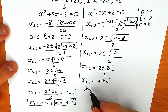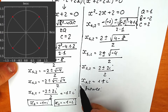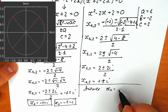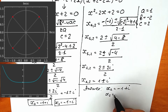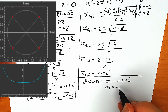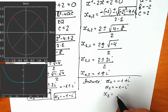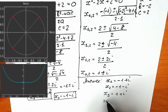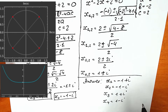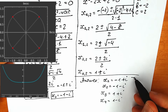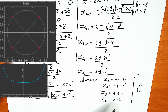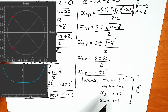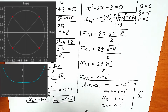Let's write our final answer. x₁ equals minus 1 plus i, x₂ equals minus 1 minus i, x₃ equals 1 plus i, and x₄ equals 1 minus i. One interesting note: all these roots are complex roots — none of them are real. You can also see a plot and the graph of this function with the points of intersection.